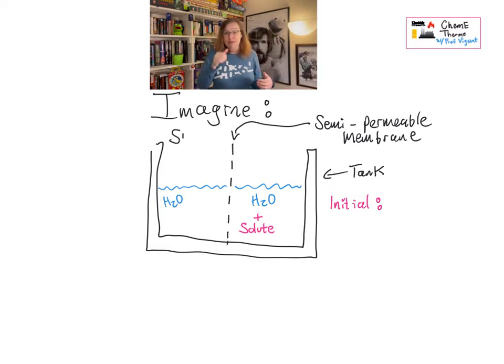but on one of the sides there is a solute of some kind. Maybe it's salt, maybe it's sugar, dissolved in that water. And so we have side one, pure water, side two, a water with a solute. And that solute is too big to go through the membrane. So water can move back and forth freely, but that, let's call it sugar for the moment, that sugar cannot move through the membrane.